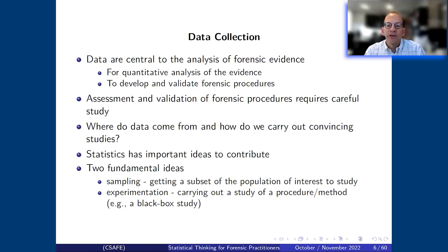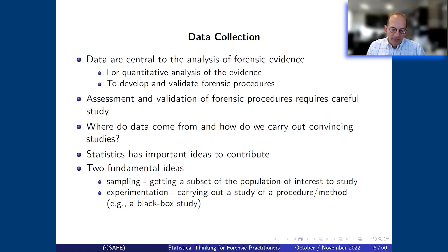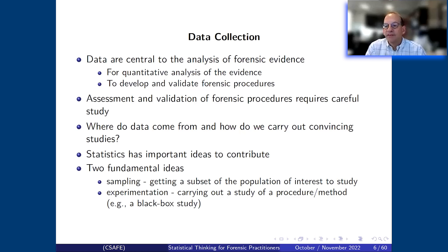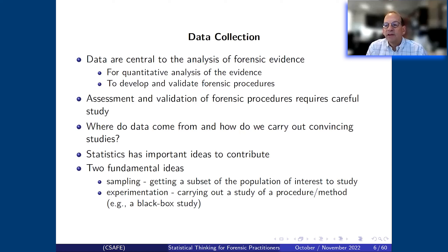Today's focus starts with thinking about where data comes from. There are two key ideas: one is sampling — the big picture talks about a population and a sample, and the question is where that sample came from. The second way we get data is by running an experiment. The black box studies common in forensics are an example of such a study. We're most interested in analysis of evidence, and some of the tools for sampling and experimentation are relevant there.